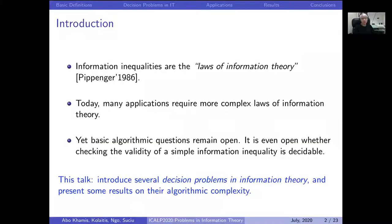Information inequalities are inequalities between entropic terms, and they have been called by Nick Pippenger in 1986 the laws of information theory. Today they have even more applications than they had back in 1986, and today we require even more complex laws of information than linear information inequalities. Yet the most basic algorithmic questions remain open — it is open today even whether deciding simple linear information inequalities is decidable.